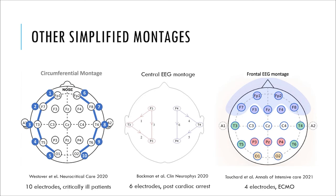These different montages were used for different types of patients. The headband montage — with 10 electrodes focused on the temporal lobes — was used in comatose critically ill patients for seizure rule-out. The central montage is good for evaluating patients post-cardiac arrest because it focuses on the paracentral areas. The four- or five-electrode frontal montage is good for ECMO patients where you can't move the head but have good access to the front, allowing a global assessment of what's going on in the brain.